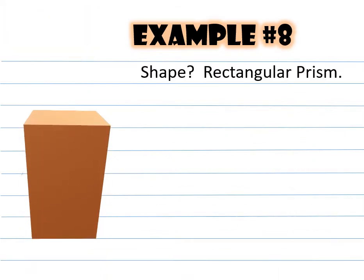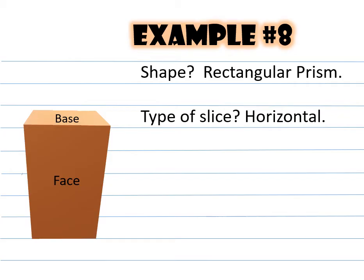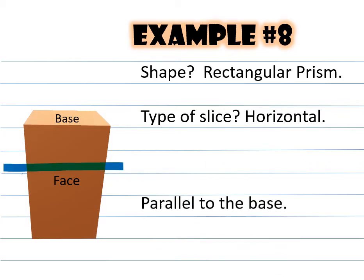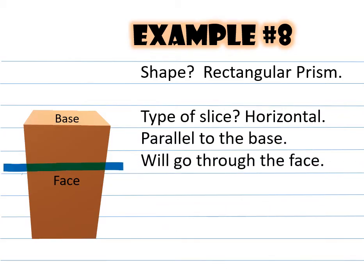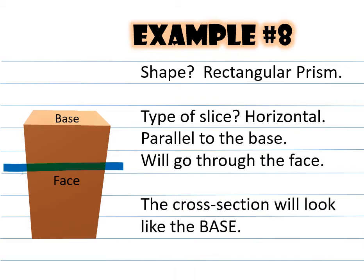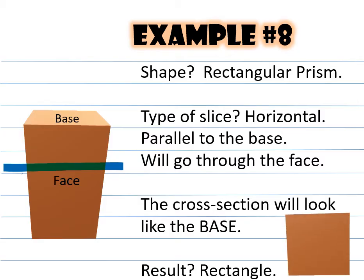Example number eight: the shape is a rectangular prism. The type of slice is going to be horizontal, which is parallel to the base and will go through the face. The cross section will look like the base. The result is a rectangle.